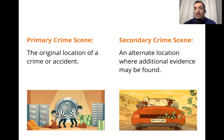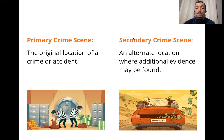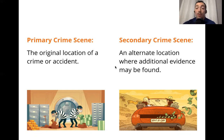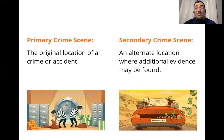There's also a secondary crime scene. This is an alternate location — a different location — where additional evidence, additional clues may have been found. In our bank robbery example, the robbers need to get away and they use a getaway car. That getaway car becomes a secondary crime scene because there are probably going to be fingerprints all over, and they may drop some cash bills in there — they're going to leave evidence in that car.